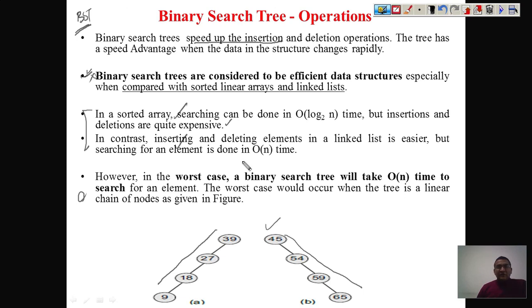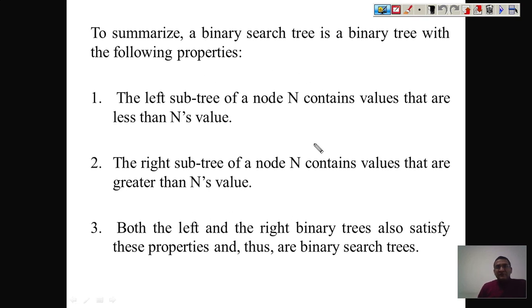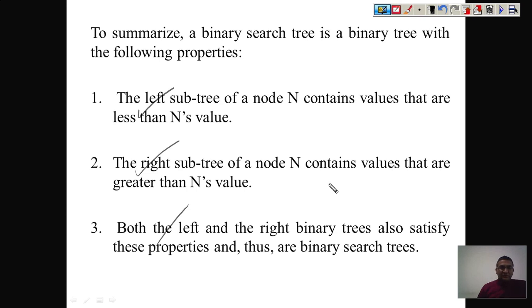In the next lecture we will see in detail the strategies for performing search, insertion, and deletion in a binary search tree, which will allow us to properly analyze and compare its running time with other data structures. To summarize: a binary search tree is a binary tree with an ordering property — the left subtree contains values less than the root, the right subtree contains values greater than or equal to the root, and this property must be satisfied throughout the entire tree.